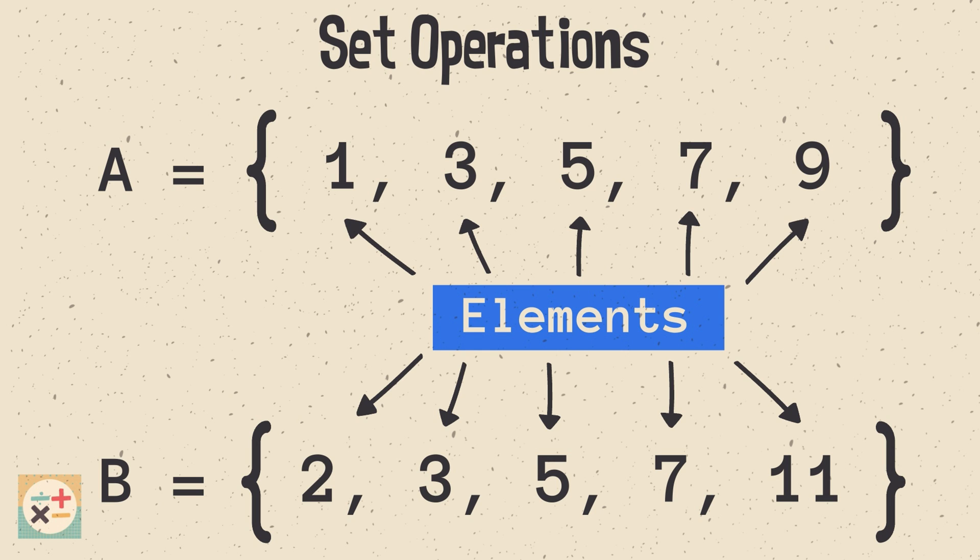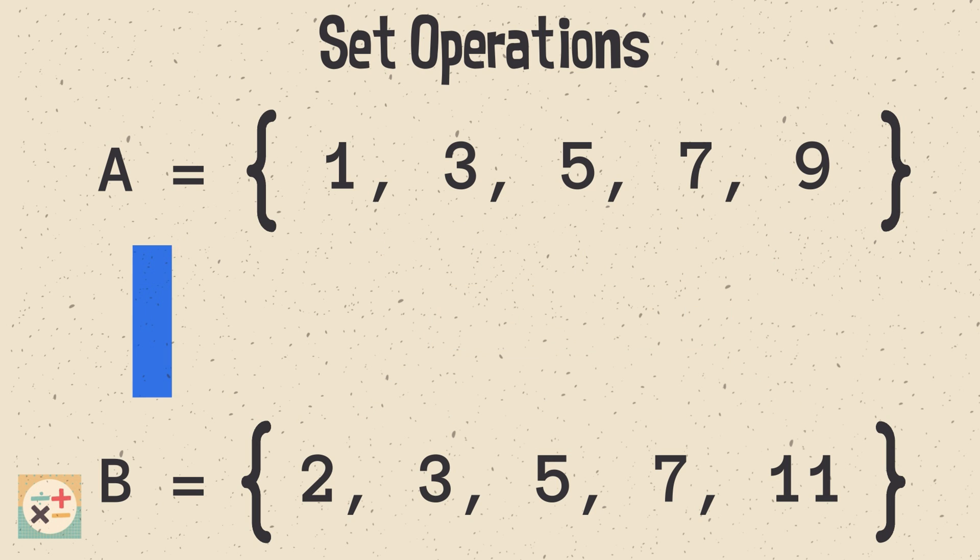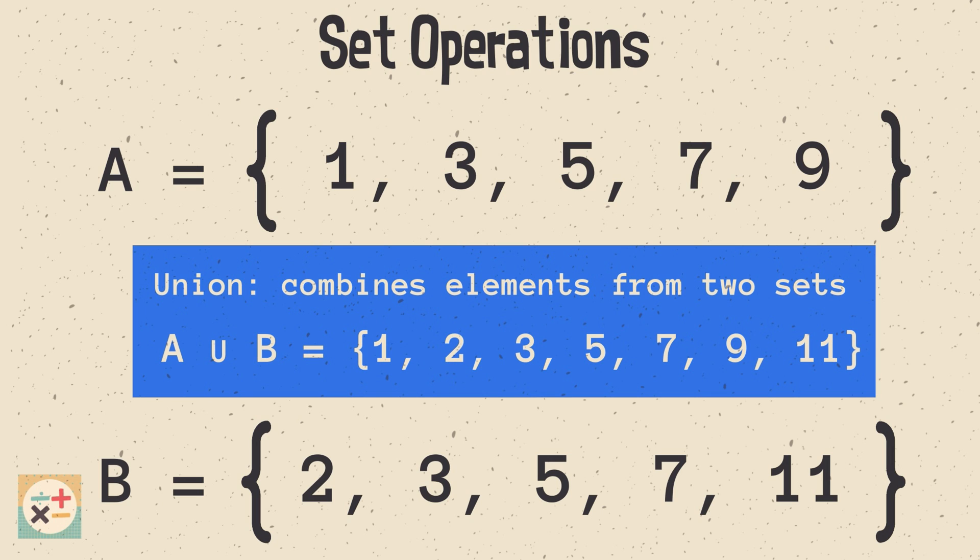Let's look at one such operation, named union. Union combines all unique elements from both sets. In this example, we have the union of A and B. Notice that numbers are only written once, even if they appear in both sets.